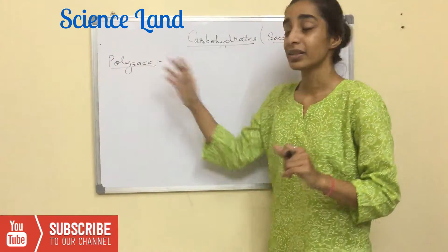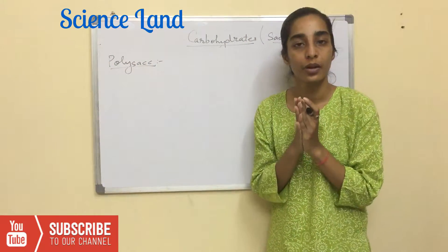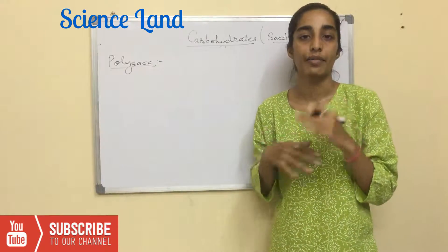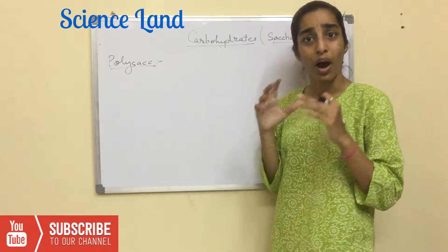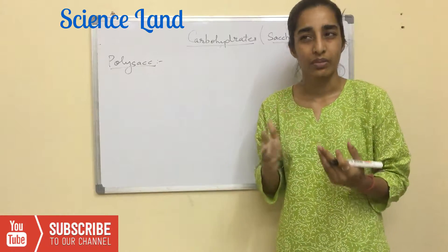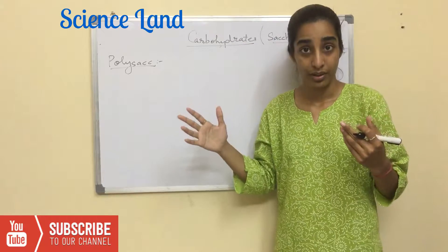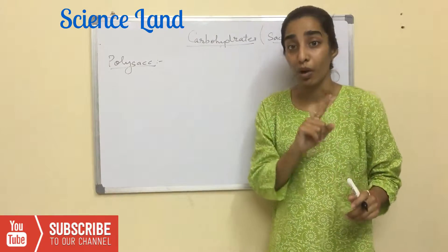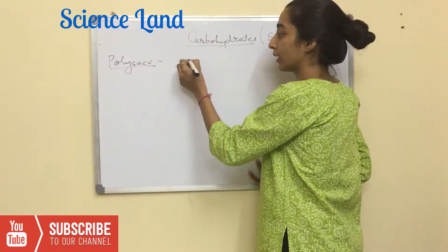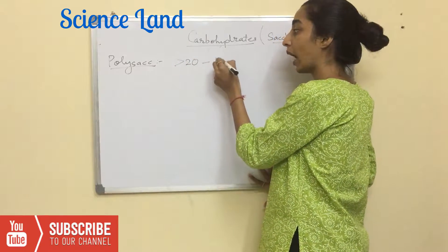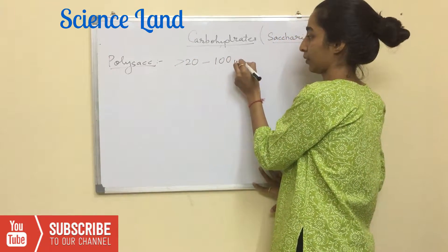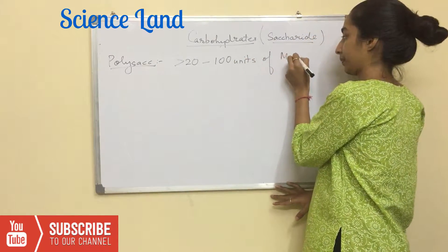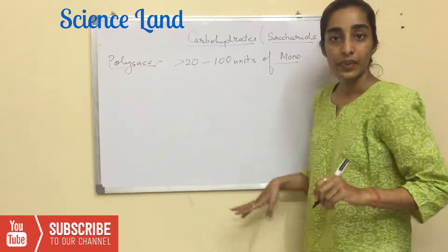Third one: Polysaccharide. So what is polysaccharide? Lots of monosaccharide units come together and give you polysaccharide. So it is more than 20 and the number can go up to 100 units of monosaccharide.